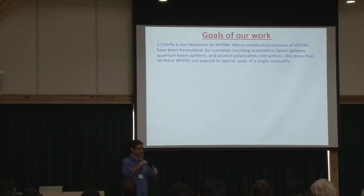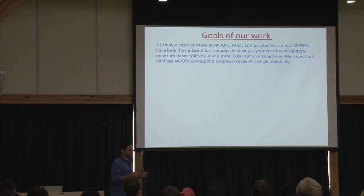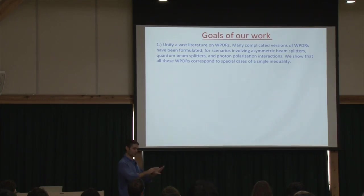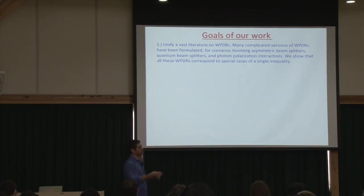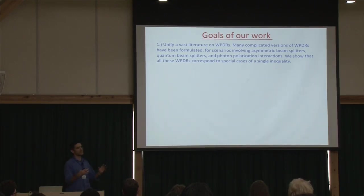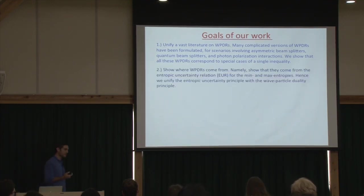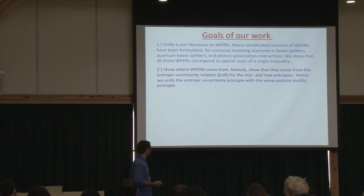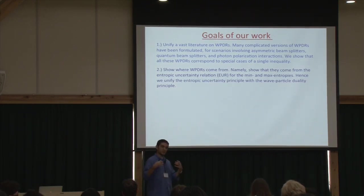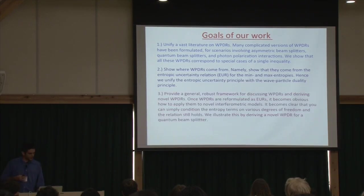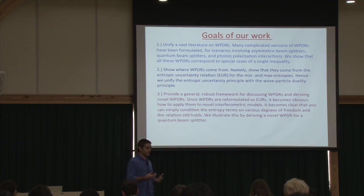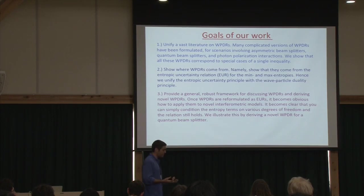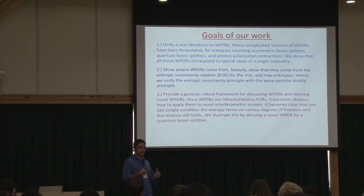Let me step back and give the overview of the goal of this work. We are trying to unify a vast literature on wave-particle duality relations. In addition to the ones already shown, there are other relations for more complicated interferometer settings, such as asymmetric beam splitters, quantum beam splitters, polarization dynamics, or quantum erasure. We want to bring these relations together and show they are consequences of a single inequality — an entropic uncertainty relation involving the min and max entropies. We are showing an equivalence between wave-particle duality and entropic uncertainty, and this provides a rigorous framework to discuss and derive wave-particle duality relations. Entropic uncertainty relations are easy to condition on systems, making them a very natural way to frame wave-particle duality.